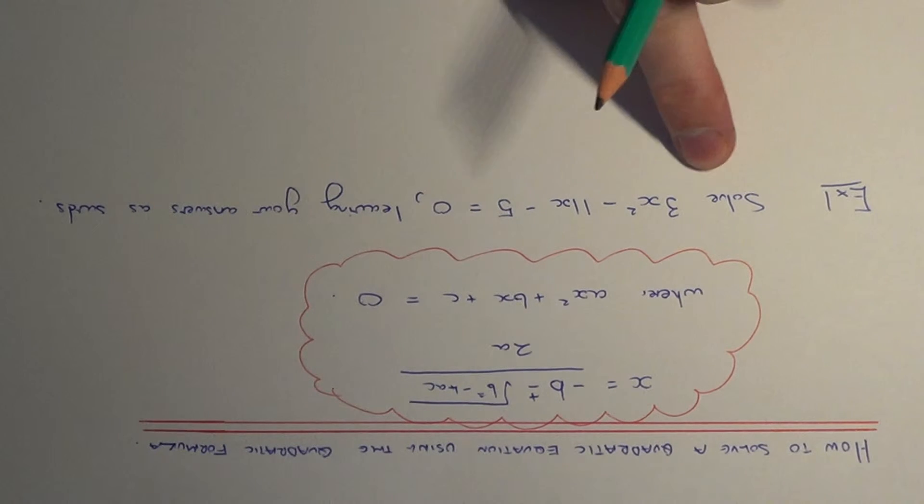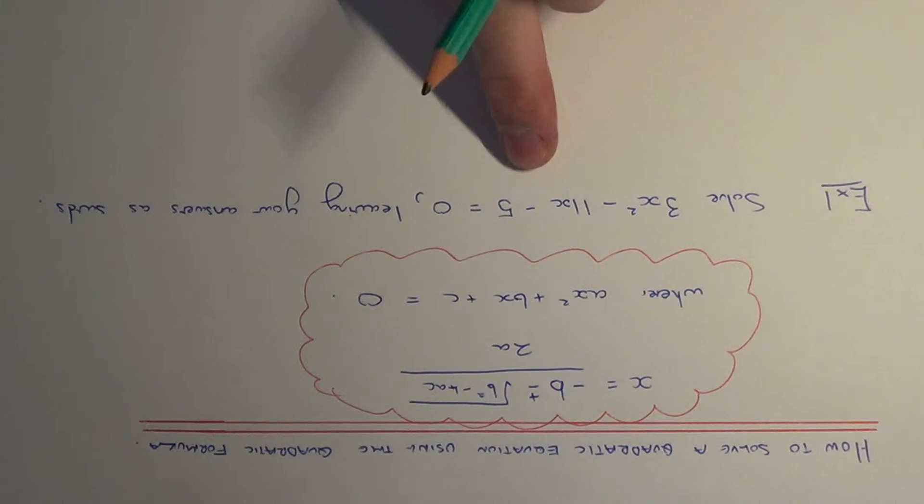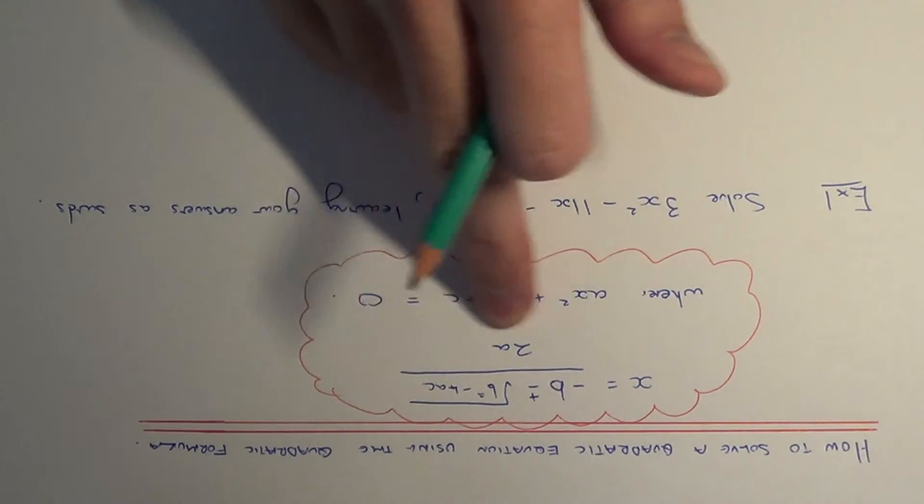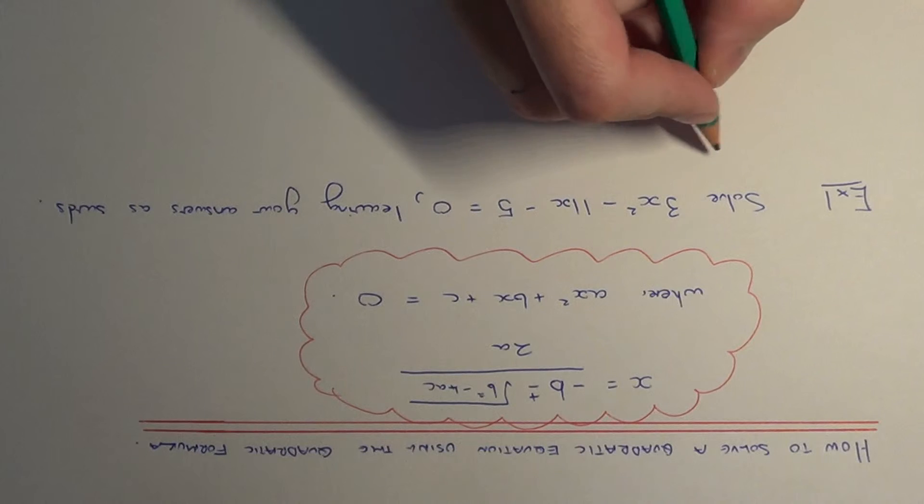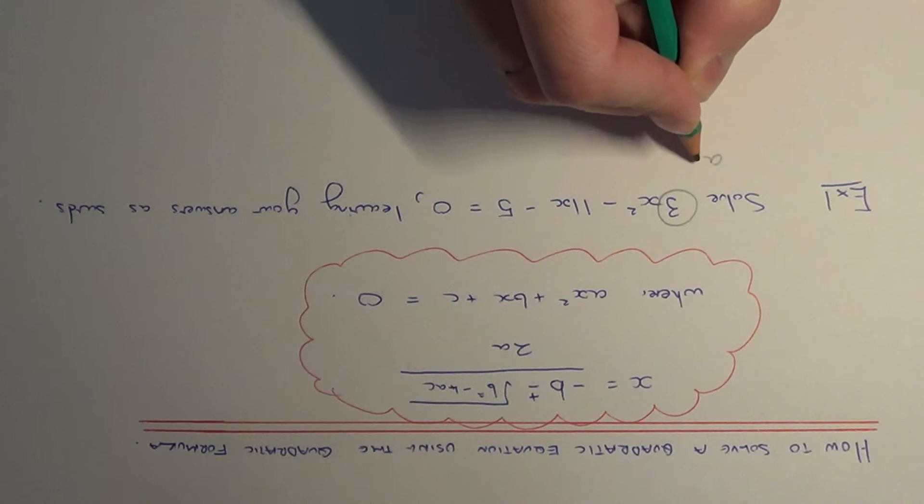The next step is to write down the values of a, b, and c which we're going to substitute into this formula. a is the number before x squared, so this number is 3.